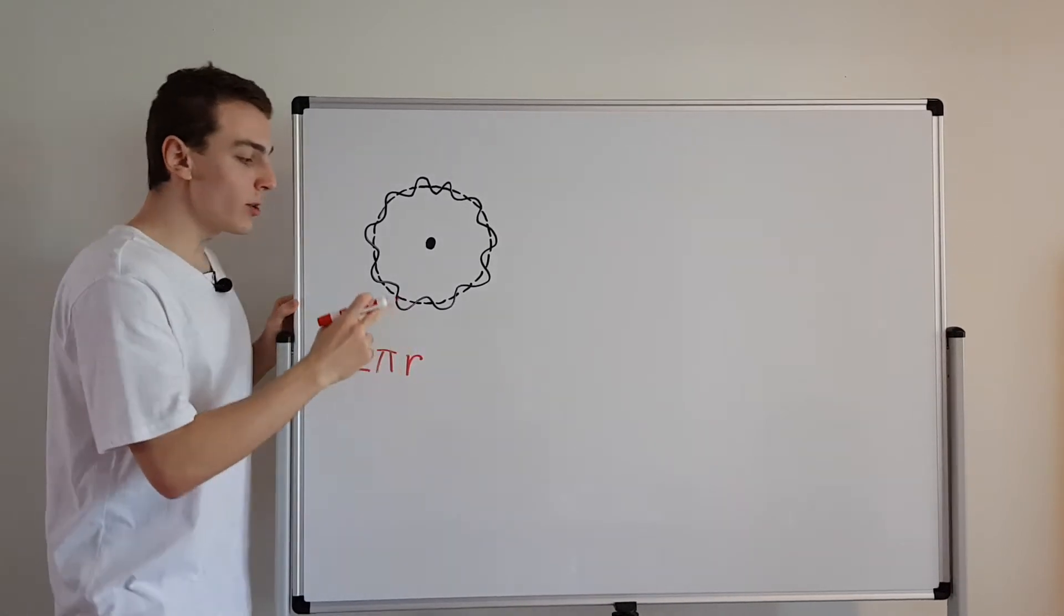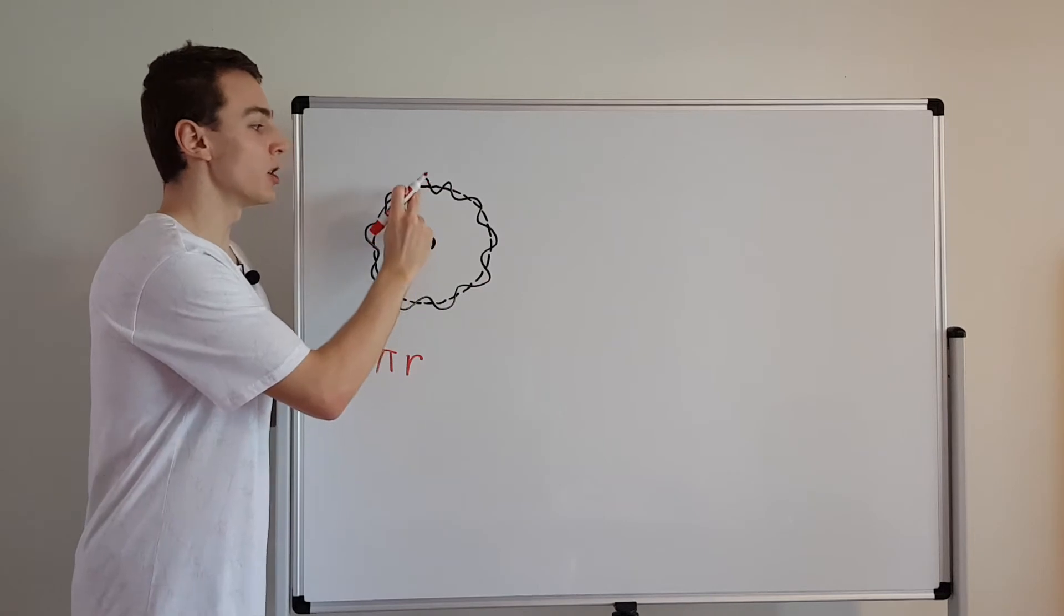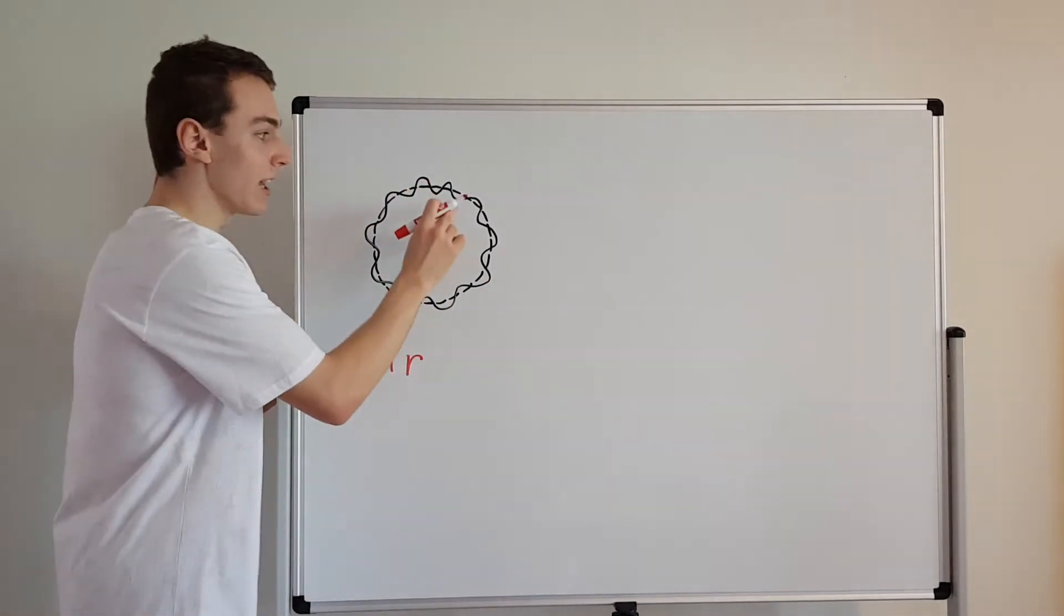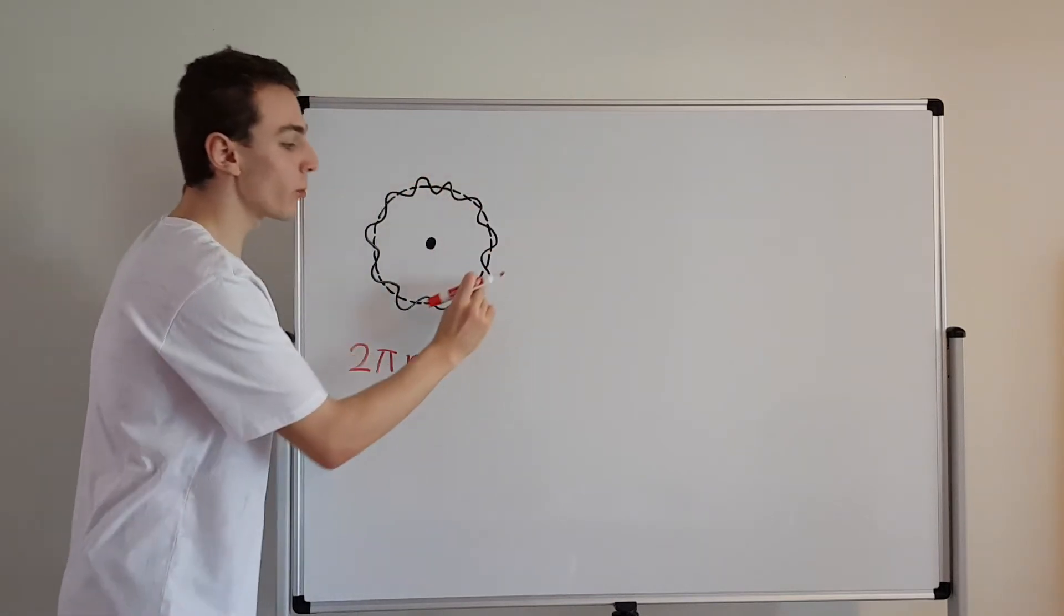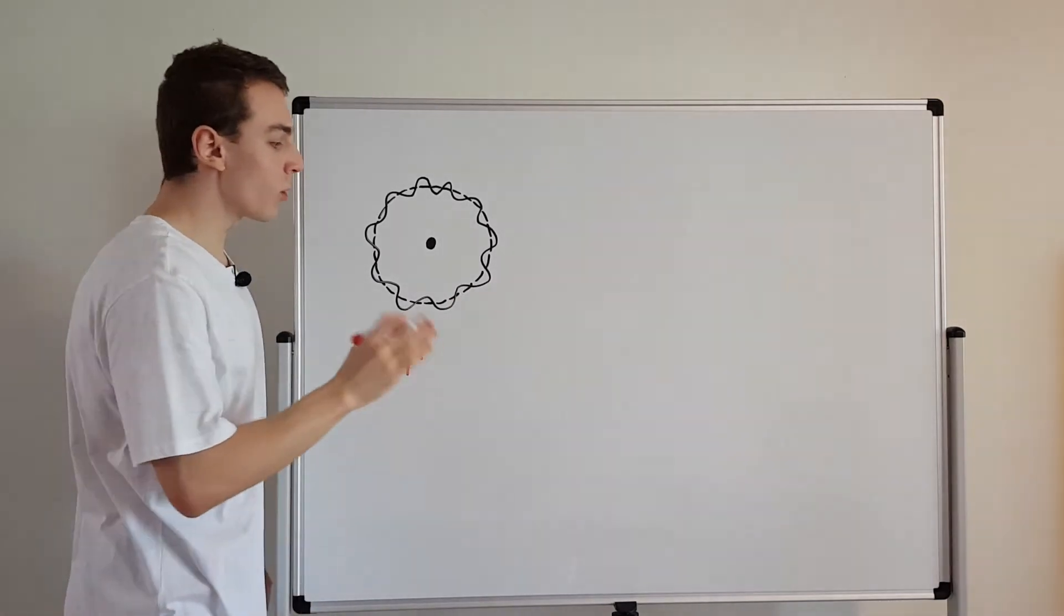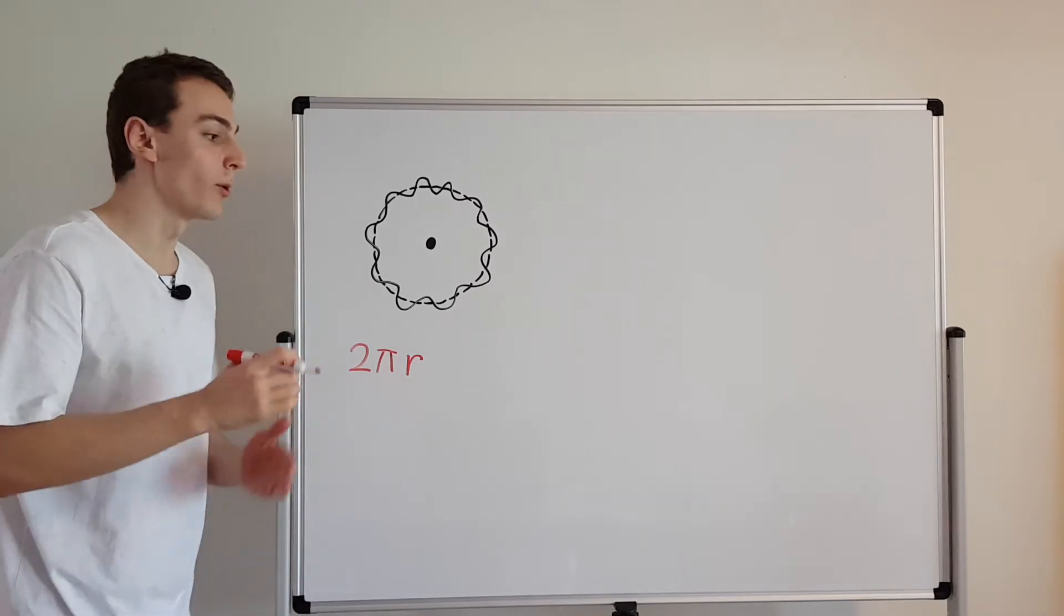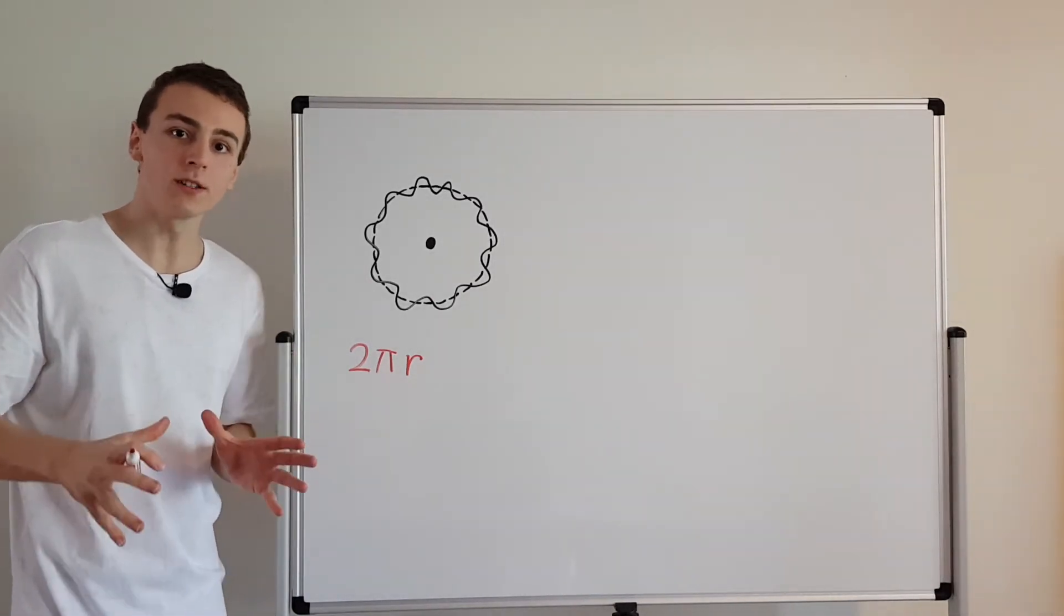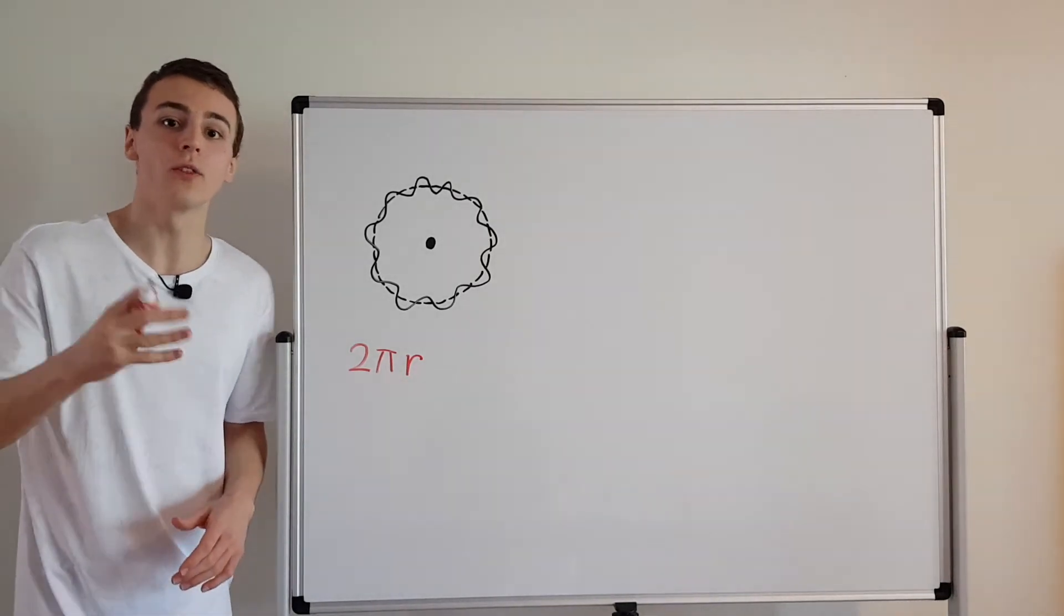Now have a look at the standing wave. Any time you go one revolution around you have to come back to the same valley. So if you pick any point over here and you go 2 pi radians all the way around you have to come back to the same valley. So what does that actually mean? That means the wavelength has to be multiplied by an integer to get the circumference. Or in other words the circumference is an integer multiple of the wavelength.